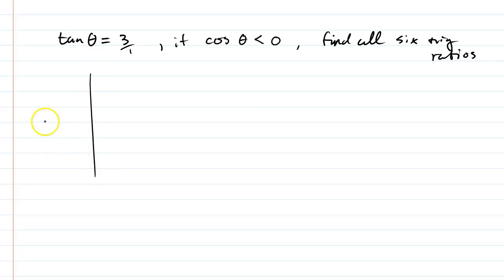Okay, so if you think originally to the bow tie here, opposite over adjacent is tangent. So we have 3 is opposite, adjacent is 1. But we have an important thing here. Cosine is less than 0, and cosine would be this side right here, adjacent. So if cosine is less than 0, then we should be on this side with negative 1.